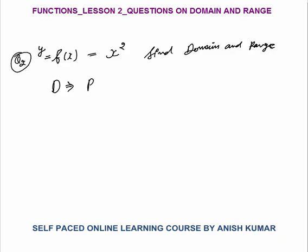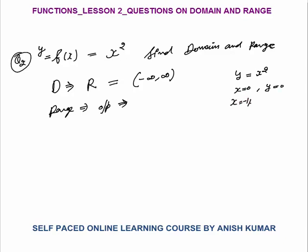So domain equals R, the set of real numbers, or minus infinity to infinity. What will be the range? Range means output. You put any value of x and your answer will be in the form of positive values — the output can never be negative because the function is y = x². If you put x = 0, then y = 0. If you put x = minus 1 by 3, then y = 1 by 9 — positive. So every negative input squared is positive. Range is from 0 to infinity, with 0 included, because when x = 0 you get y = 0.